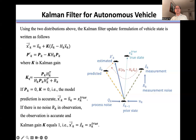Here is the Kalman gain formulation. We can identify two extreme cases. First, if the model prediction has no noise — that means if the covariance P equals zero — then the Kalman gain K is zero. A Kalman gain of zero means the model prediction is accurate and the same as the true state, so the estimate from the model is equal to the true state.